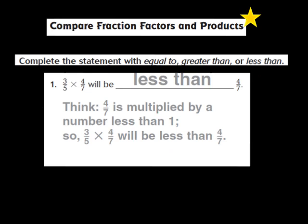The problem is the fraction 3/5 times the fraction 4/7, and it says it will be blank than the fraction 4/7. 4/7 is being multiplied by a number less than 1 — the fraction 3/5, which is less than 1. So the product of 3/5 times 4/7 will be less than 4/7. When you find a part of a part — a fraction times a fraction — the product will always be less than either of those two parts. So 3/5 times 4/7 will be less than 4/7.